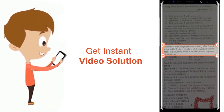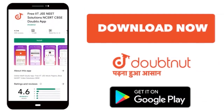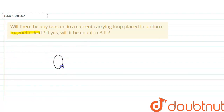Hello everyone. Let me explain this question to you: Will there be any tension in a current-carrying loop placed in a uniform magnetic field? If yes, will it be equal to B·i·R?